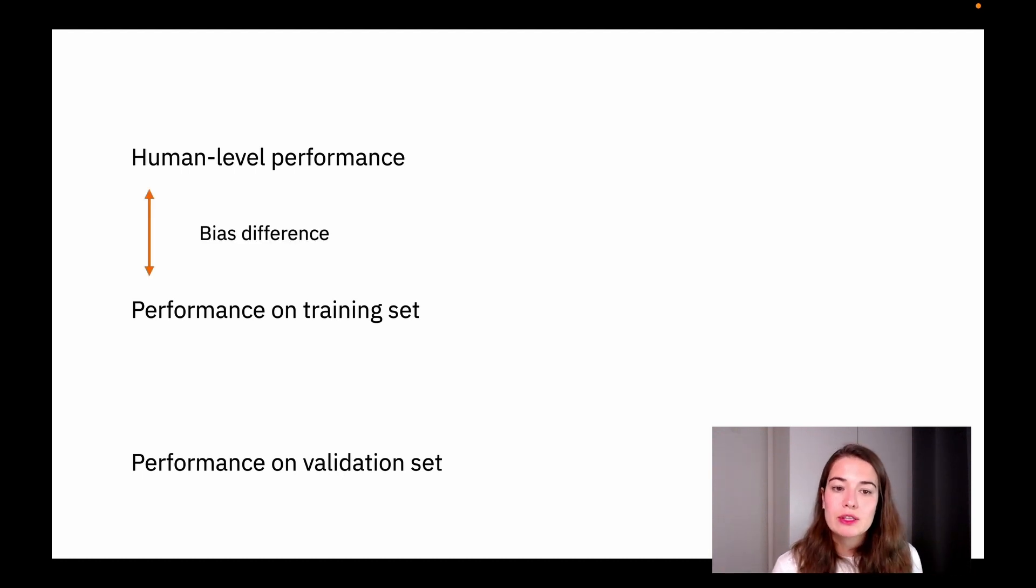The difference between the human level performance and the performance on the training set, we call it the bias difference, the difference in the biases. And it does make sense, right? Because if your performance on the training set is way lower than the human level performance, it might mean that your model is not able to fit the training data super well.